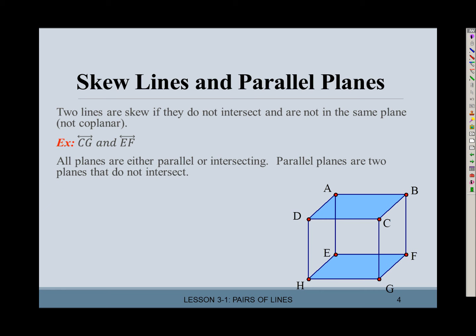Skew lines and parallel planes. Two lines are skew if they do not intersect and they're not in the same plane — so they're not co-planar. For example, line CG and line EF: line CG is in the front, line EF is in the back. It looks like they overlap, but if you think of this as three-dimensional, they do not. So those are skew lines — they're not parallel and they don't intersect.